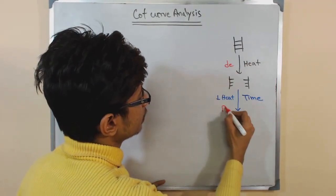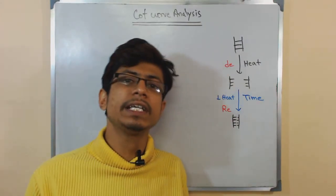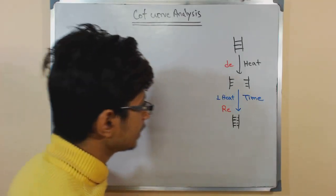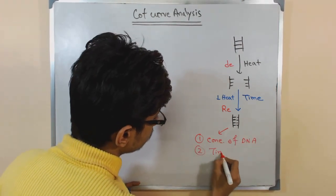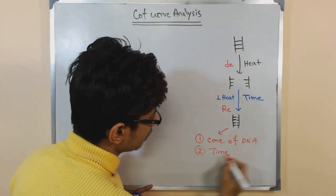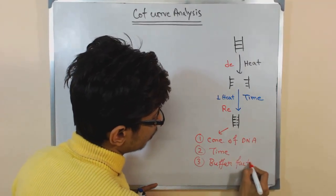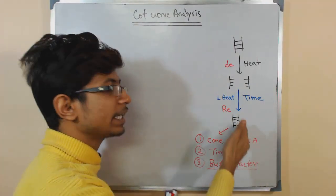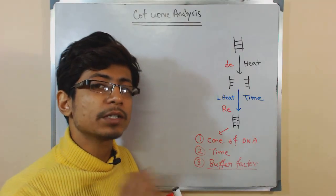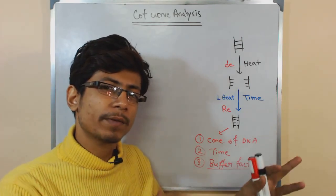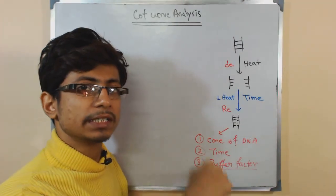During this process, the renaturation of DNA depends on three important things: first, the concentration of DNA in the solution; second, the time provided for those DNA strands to re-anneal; and third, a buffer factor. DNA has a negatively charged backbone, so the presence of cations affects the course of re-annealing. The buffer factor corresponds to the percentage of cations present in the solution.